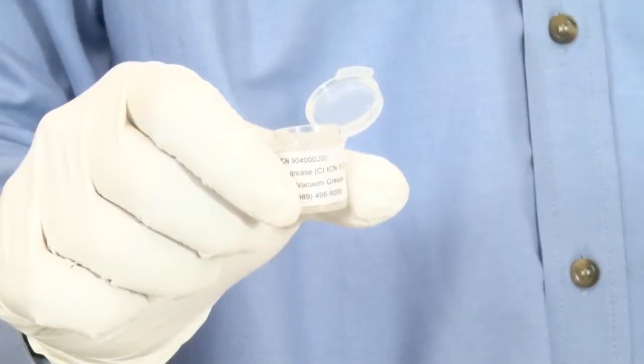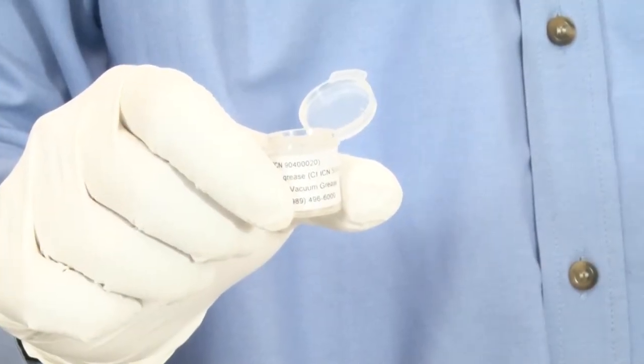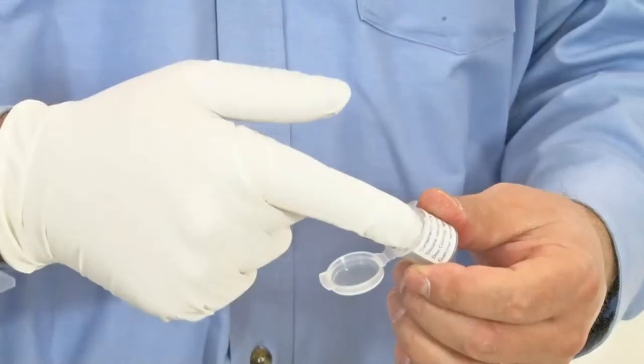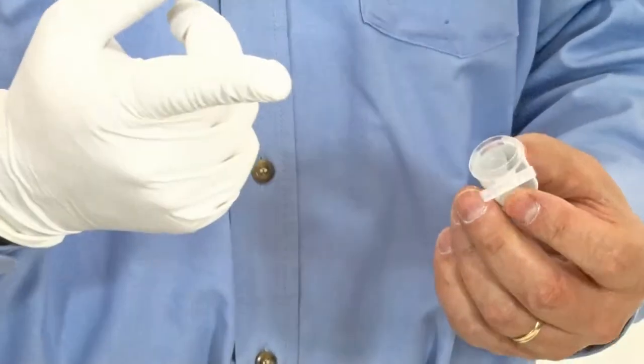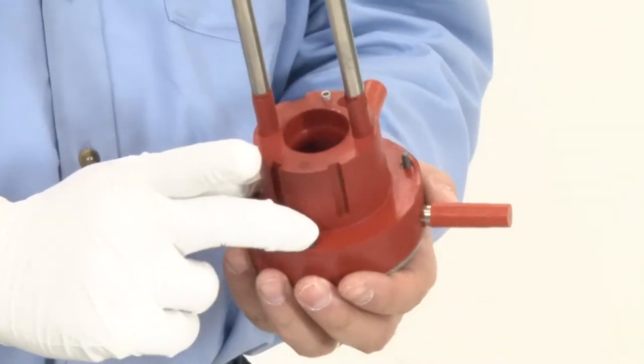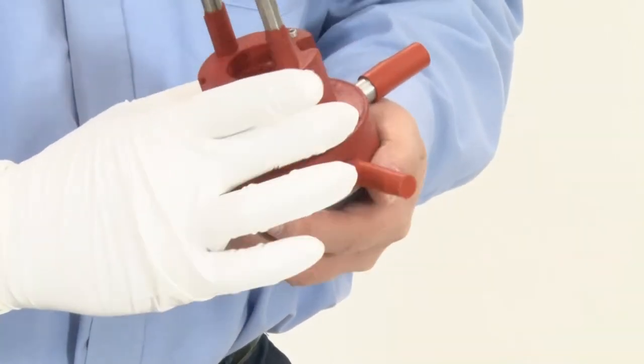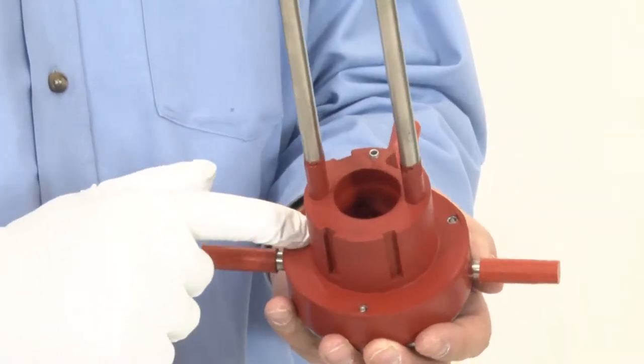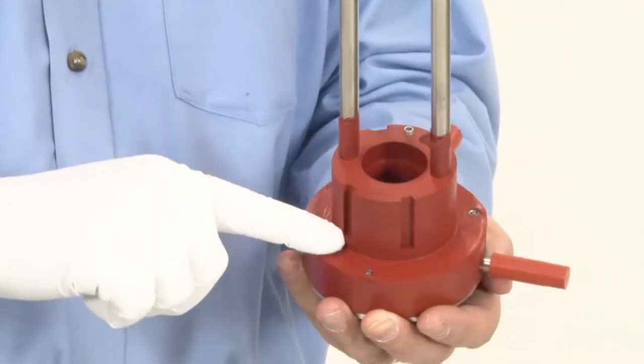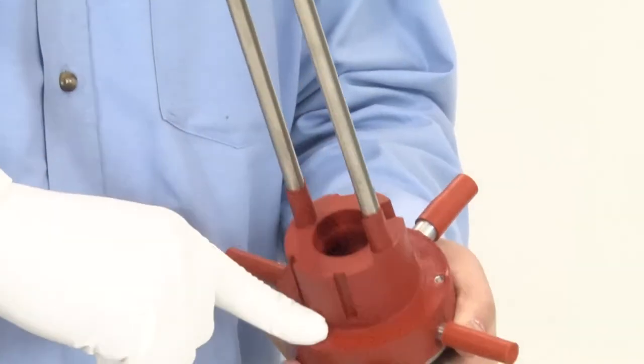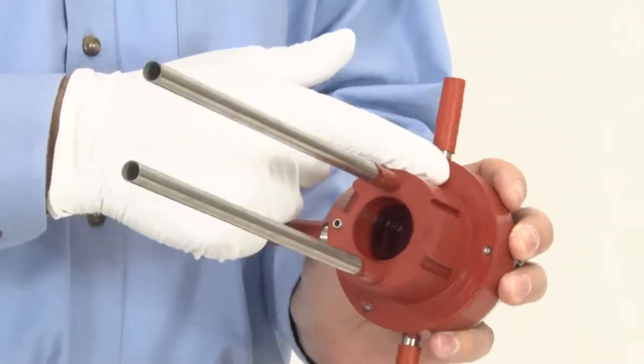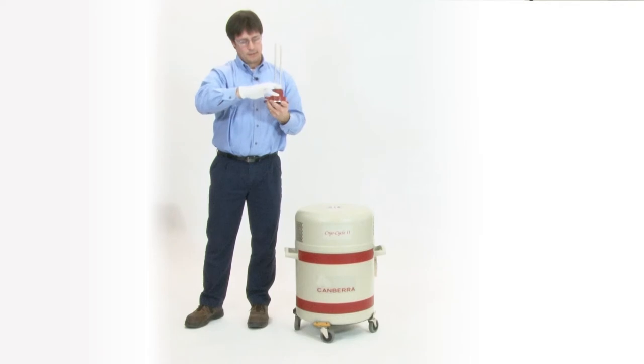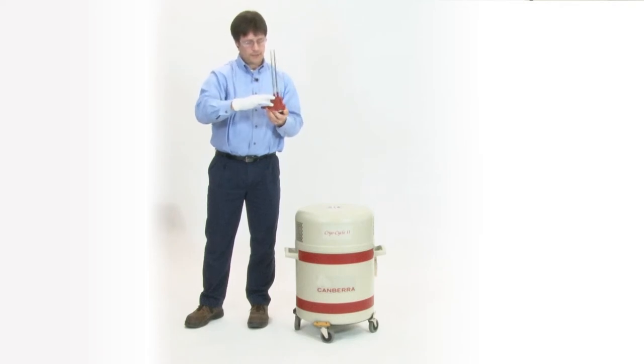After that, we take our supplied vacuum grease. So just take a little bit on your finger, about pea-sized amount. And you can see the clamp ring and the screws are already installed, so you need to push the screws down so you'll have the flat surface to install your grease on. So that pea-sized amount, you just spread it around on this edge of the collar and try and get a nice, even film throughout the collar.